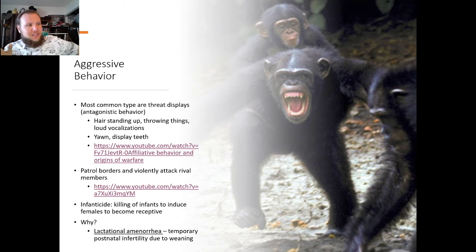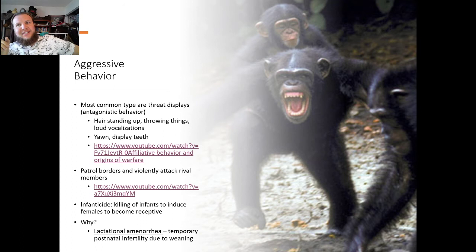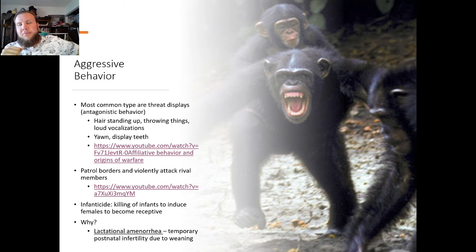There are also cases of infanticide — killing infants to induce females to become more receptive to reproduction. This is because of lactational amenorrhea, which means temporary postnatal infertility due to nursing. If an invading alpha male kills the infant of a female, he can mate with her much sooner than he would if that infant were alive.